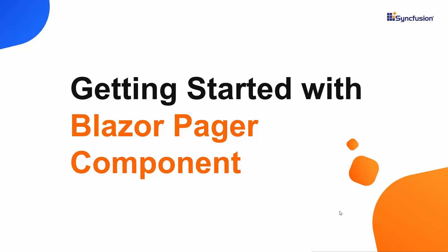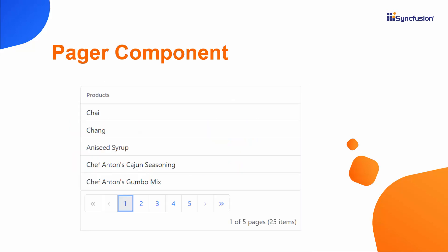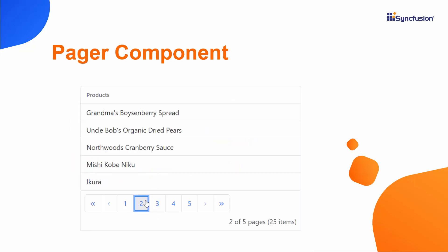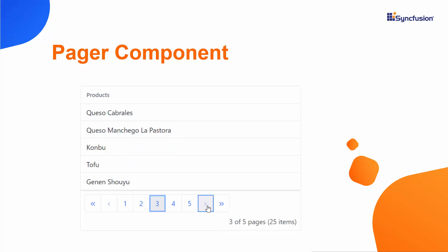Hi everyone, welcome to this video on how to get started with the Blazor Pager component. The Blazor Pager component splits a data set into section pages, so you can display them in pages. To explore other features available in our Blazor Pager, please refer to the link in the card above.